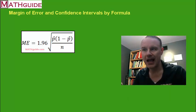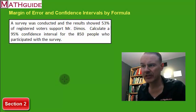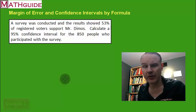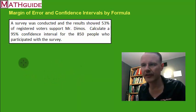Let's jump into our problems. Here's our first example. A survey was conducted and the results showed 53 percent of registered voters support this candidate, Mr. Dimos. Calculate a 95 confidence interval for 850 people who participated in the survey.